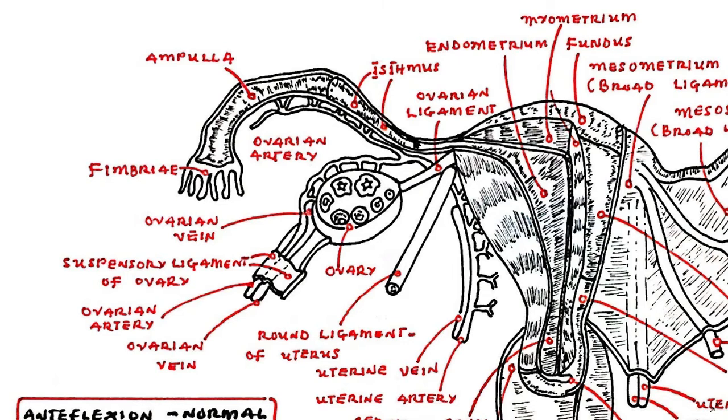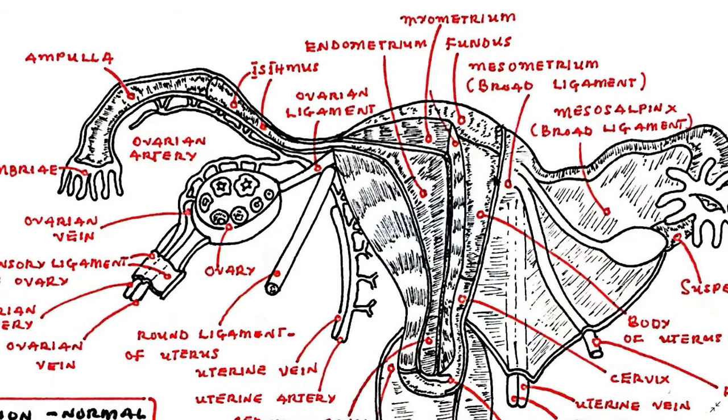The third part of the fallopian tube is the isthmus. The lumen of the isthmus narrows as it enters the uterine cavity.